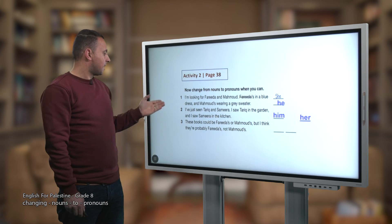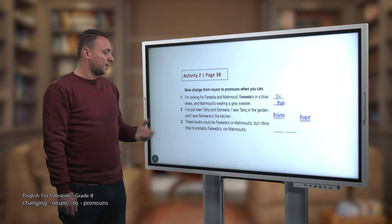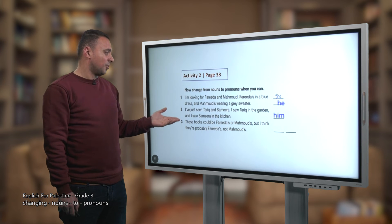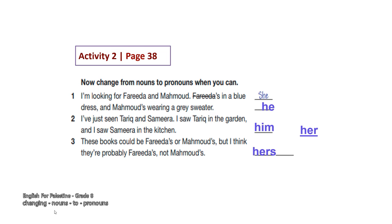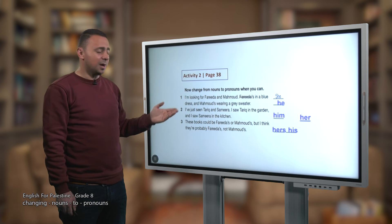Number three: 'These books could be Faridah's or Mahmoud's. But I think they're probably Faridah's, not Mahmoud's.' Here we need possessive pronouns. 'Faridah's' is replaced with 'hers', and 'Mahmoud's' is replaced with 'his'. So 'hers' and 'his' are possessive pronouns.